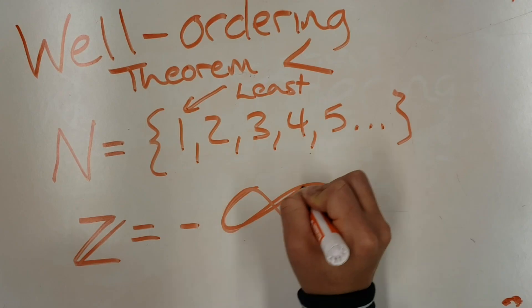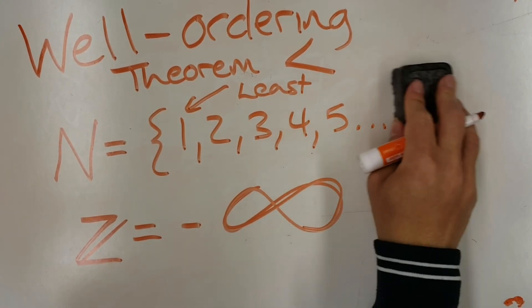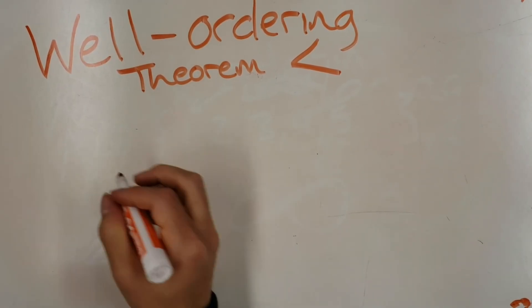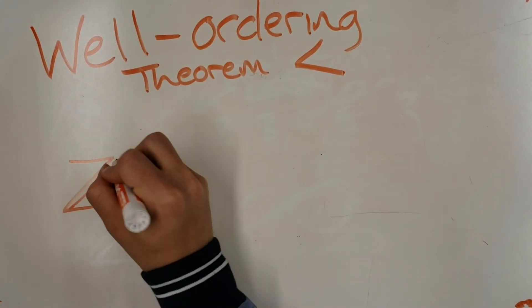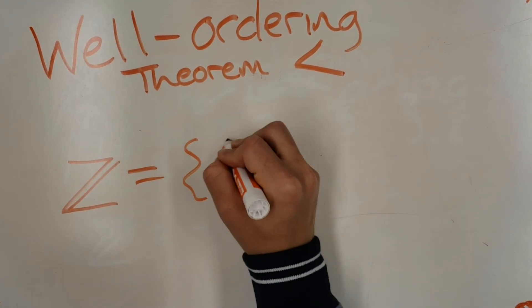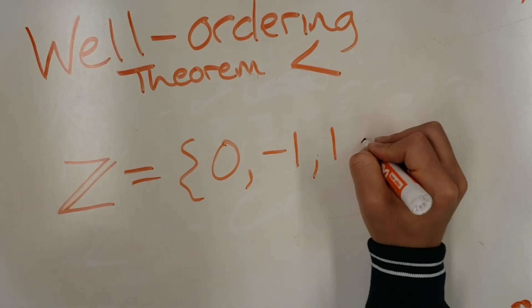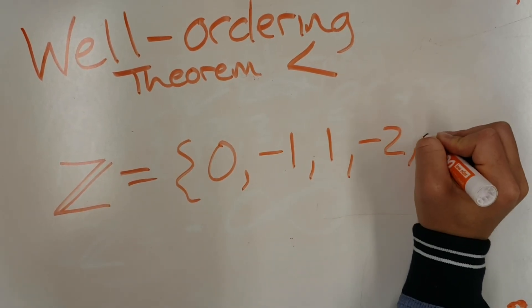What about if we ranked integers by their absolute value or distance from zero, with negative numbers coming earlier in the list than their positive counterparts? We would get the order Z equals zero, negative one, one, negative two, two, and so on.